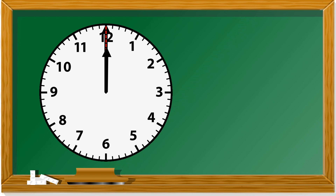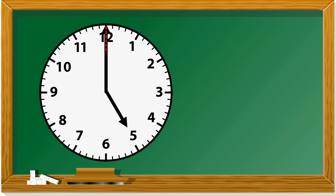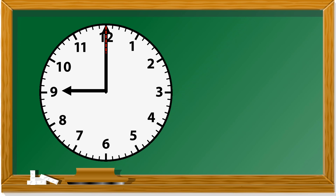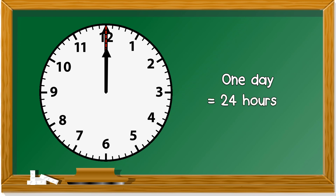Now we need to get back to midnight again. So from 12 noon until 12 midnight, we count from 12: 13, 14, 15, 16, 17, 18, 19, 20, 21, 22, 23, 24. From 12 midnight until the next 12 midnight — dari 12 tengah malam hingga 12 tengah malam semula — it's 24 hours. So one day is 24 hours. Satu hari, 24 jam.